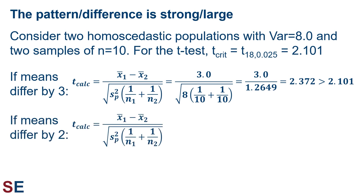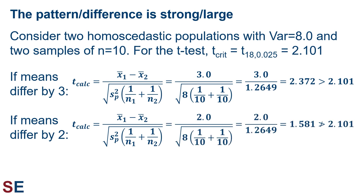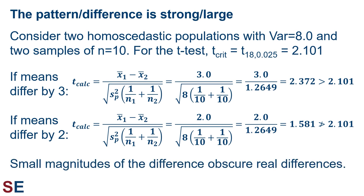Now let's look at when the population means differ by 2 instead. Plugging everything in gives a value of 1.581, which is not larger than the critical value of 2.101, causing us to fail to reject the null hypothesis of equal means, even though they are different by 2. If our populations have variances of 8 and we take samples of size 10, we would likely detect differences in the means if they're as big as 3 but not if that difference is as small as 2. Small magnitudes of difference obscure our ability to detect real differences.